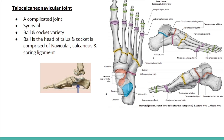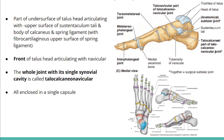The talocalcaneonavicular joint, seen highlighted in orange on the medial aspect of the foot, is a complicated synovial ball-and-socket joint. The head of the talus acts as the ball, and the socket is formed by the navicular, calcaneus, and the spring ligament. The spring ligament is located on the plantar aspect between the sustentaculum tali and the navicular, and contributes to this joint via its fibrocartilaginous upper surface. The whole joint has a single synovial cavity and joint capsule.